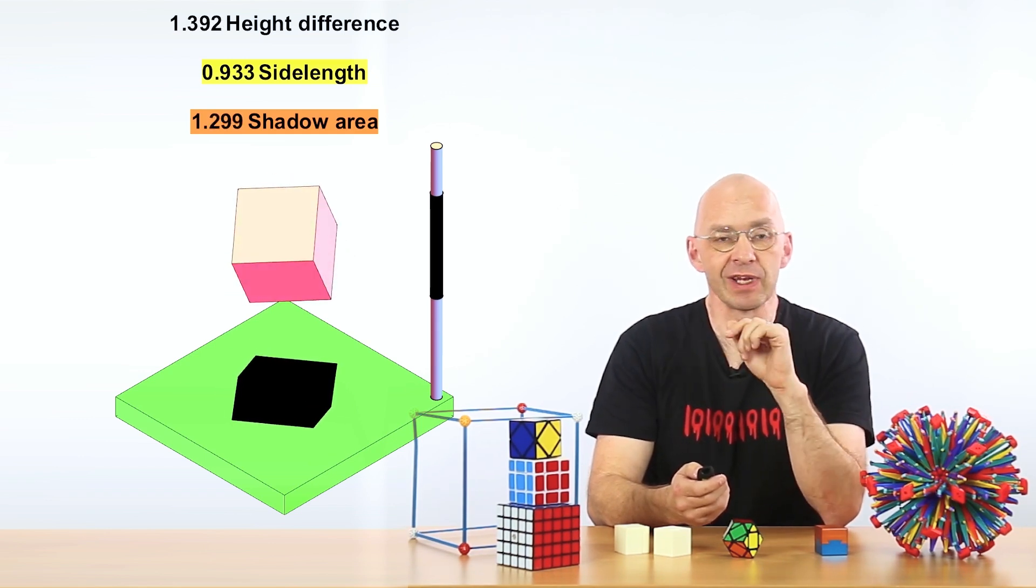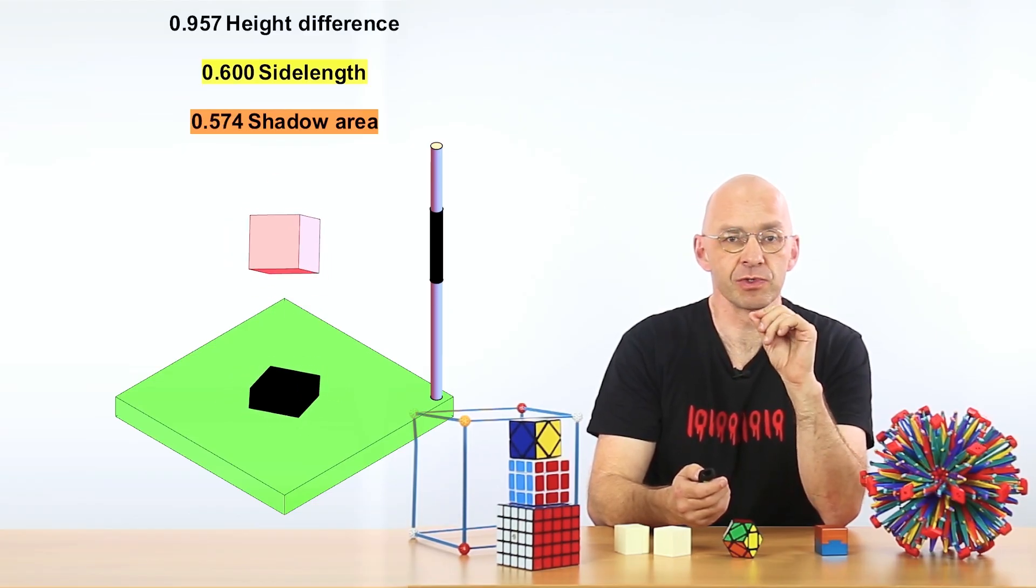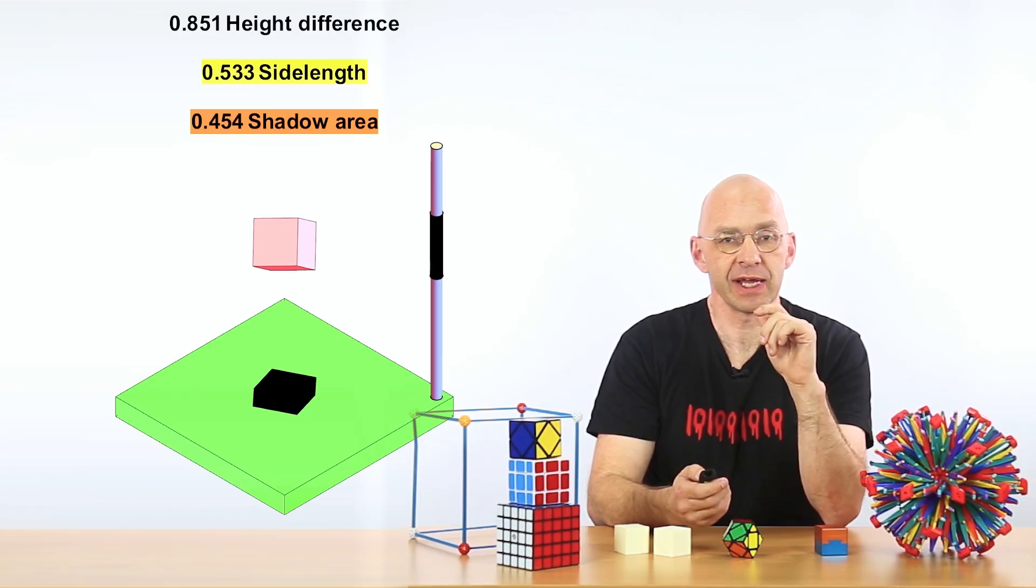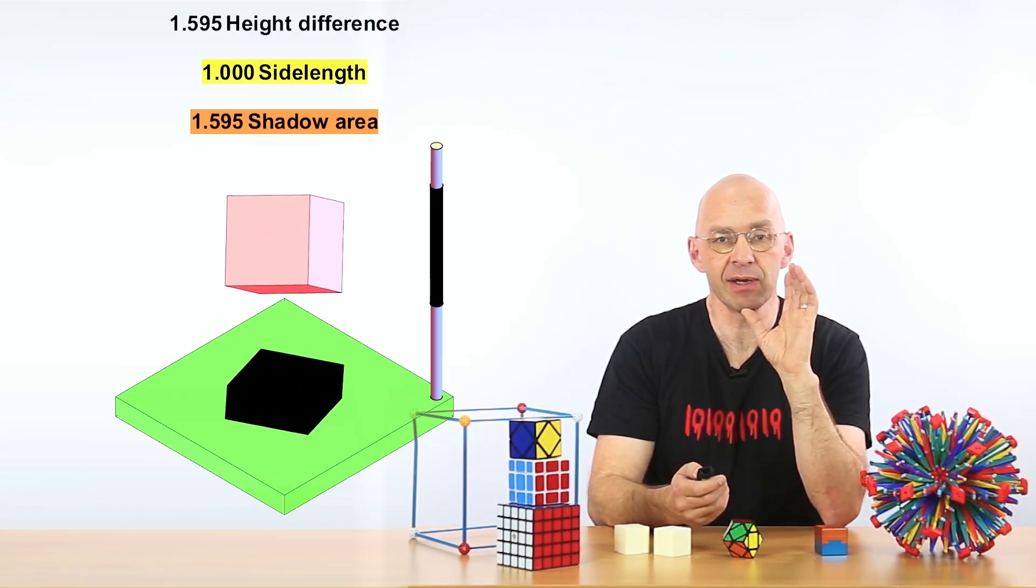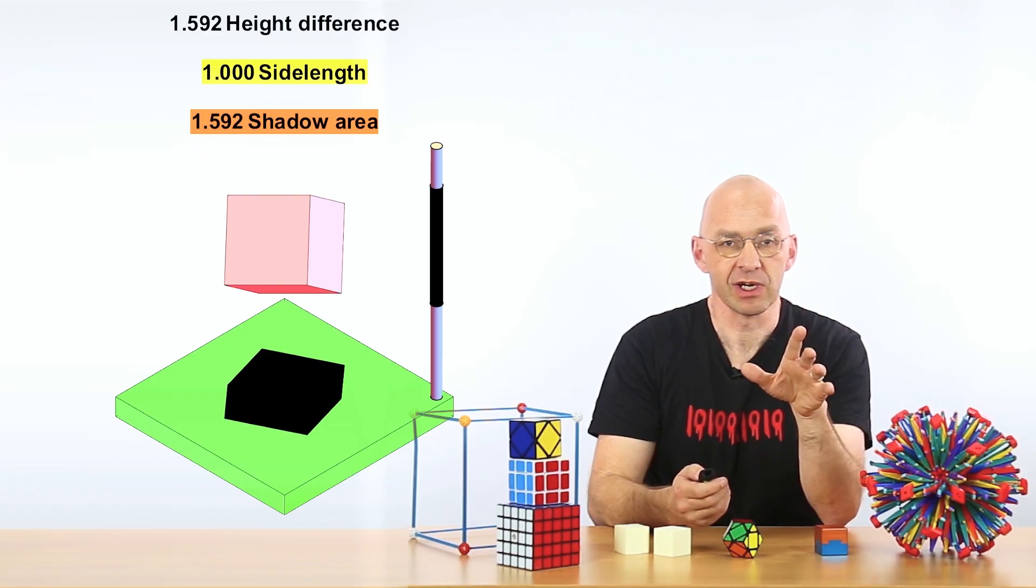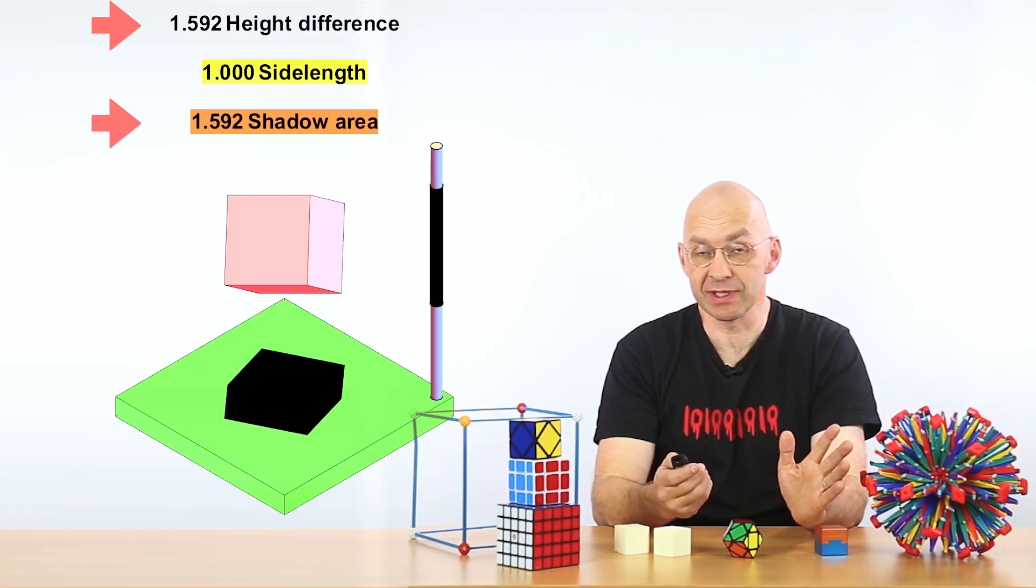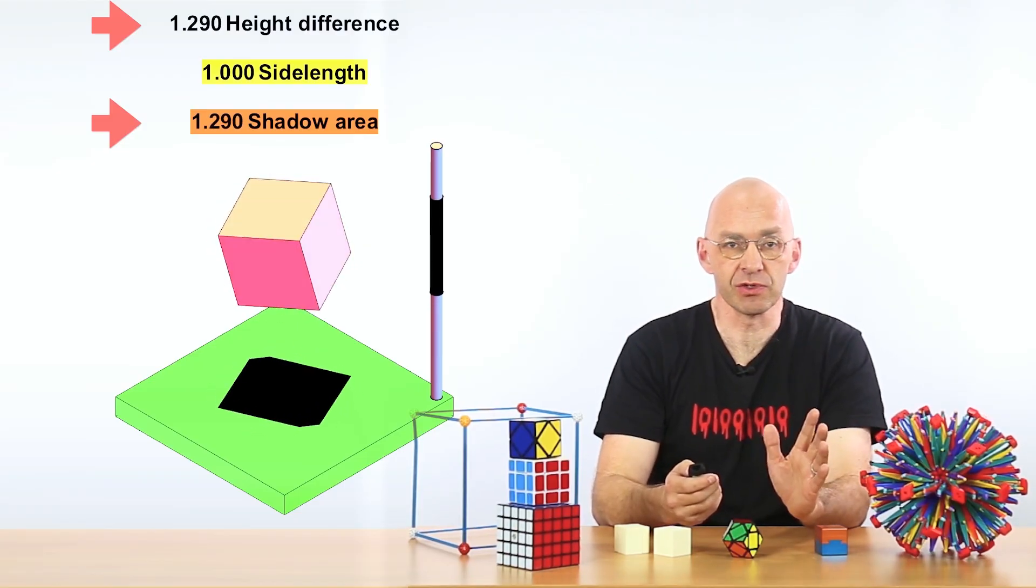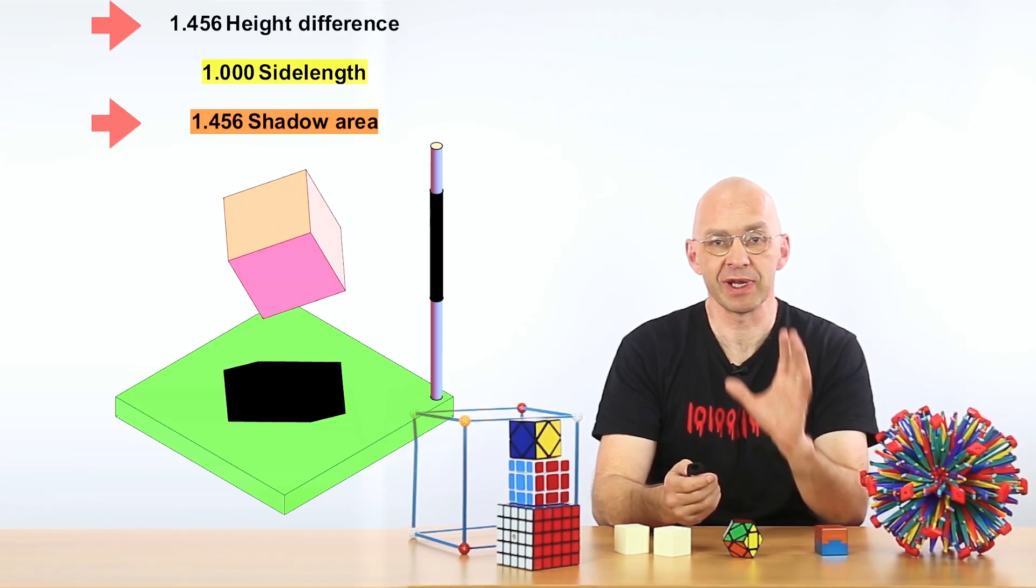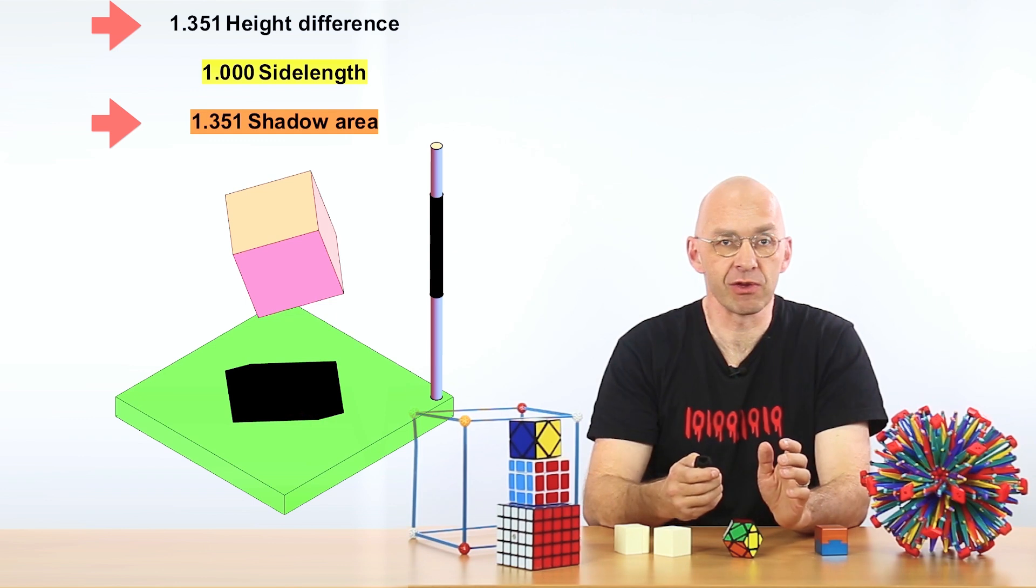Okay, now for the really, really amazing bit. Let's adjust the side lengths of our cube to be exactly 1. Then the number measuring the area of the shadow and the number measuring the height difference will become exactly equal. And this is not a coincidence. As long as we are dealing with a unit cube, this will always be the case, no matter how the cube is oriented in space and what shape the shadow pans out to be.